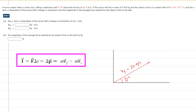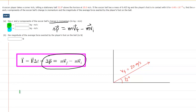In part A of the question, we need to determine the x and y components of the soccer ball's change in momentum. We can symbolize change in momentum as delta p, with a little arrow above the p to indicate that momentum is a vector. The change in momentum, shown in the purple box, is equal to the mass of the object multiplied by the final velocity, minus the mass of the object multiplied by its initial velocity. We need to separate the momentum into x and y components.